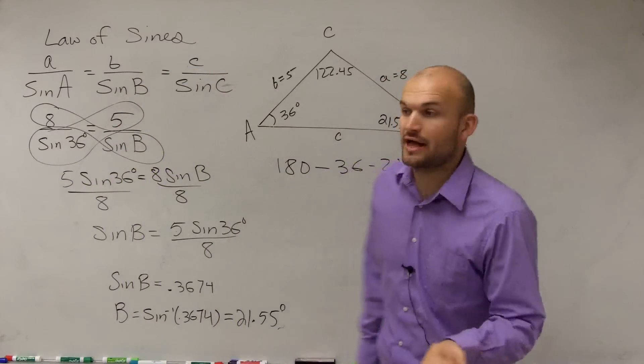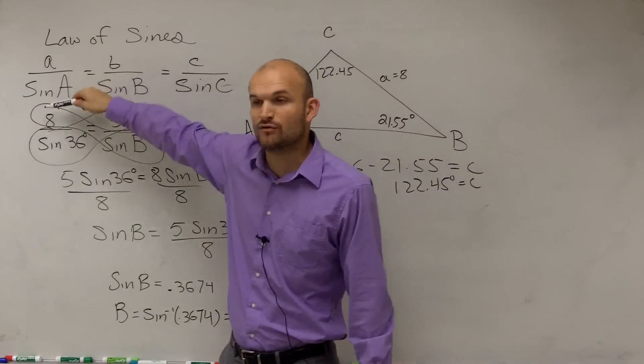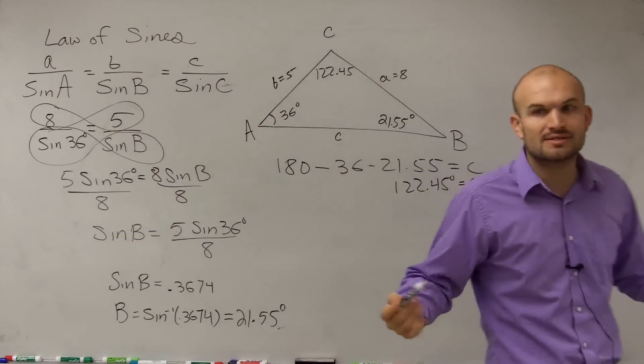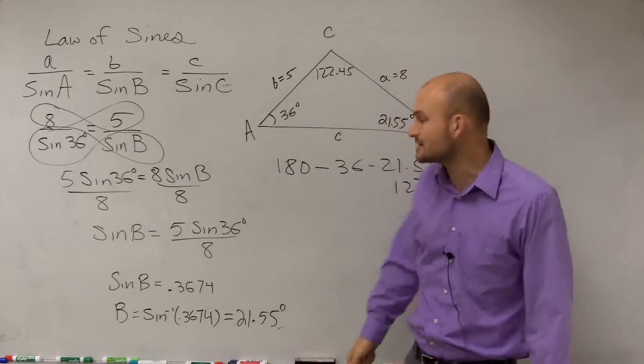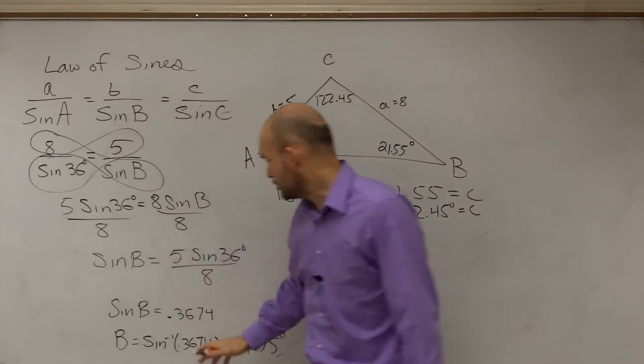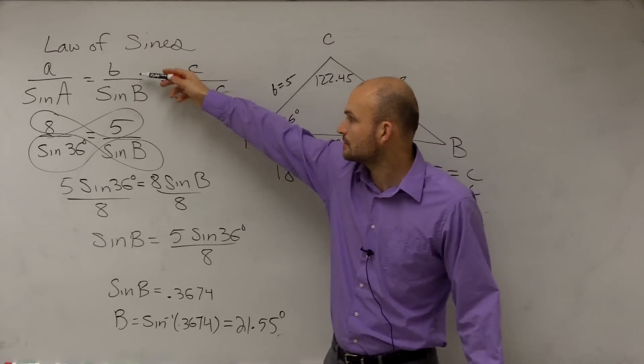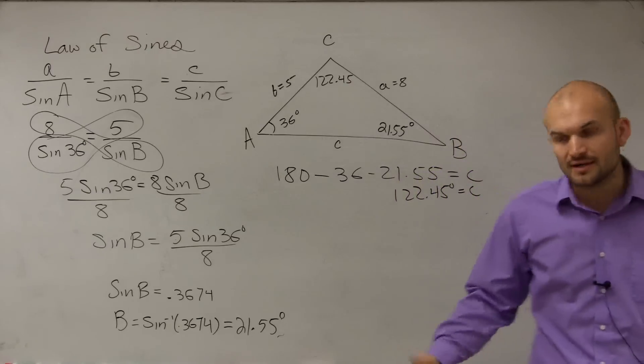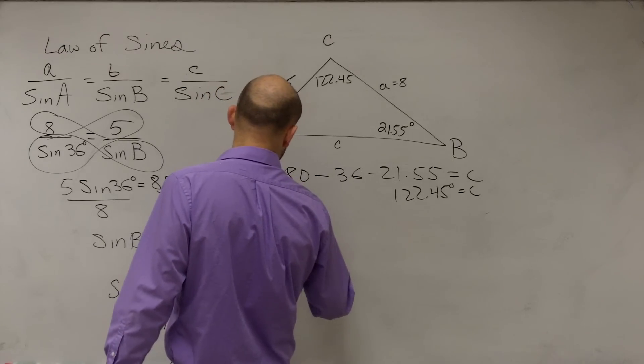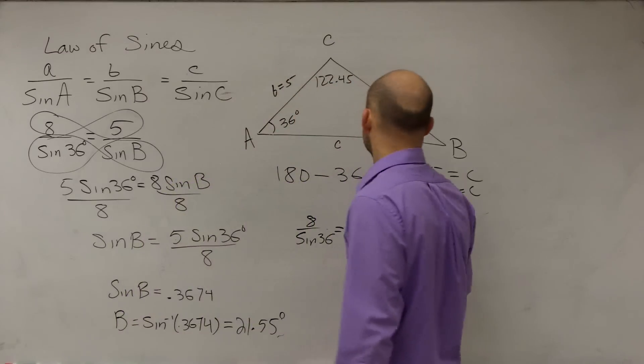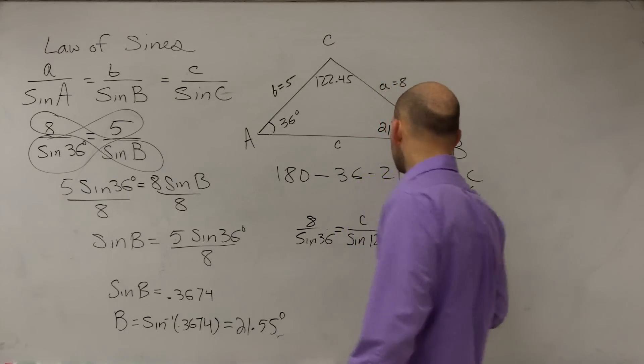So now we have a ratio. So now we have a value for C. So now we can go back and apply our Law of Sines. But we need to determine, do I want to use the ratio of A over sine of A or B over sine of B? And it doesn't really matter. I usually always like to make sure that I kind of go back to one that's the simplest. It looks like A is pretty simple, A over sine of 36. So that's just the one I'm going to apply. But if you want to use your newfound value of B of sine of 21.55 degrees under the value of 5, then you can do that as well. But we'll just set up here. We'll have 8 over sine of 36 equals C, which I do not know the value of, over the sine of 122.45 degrees.